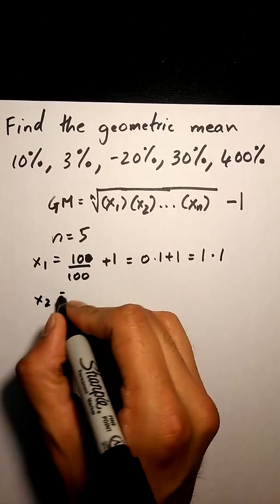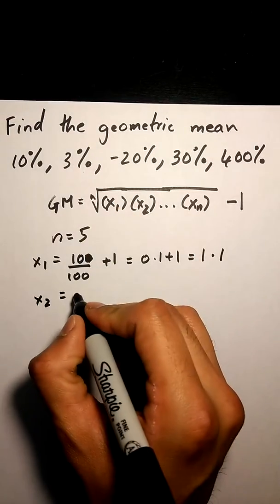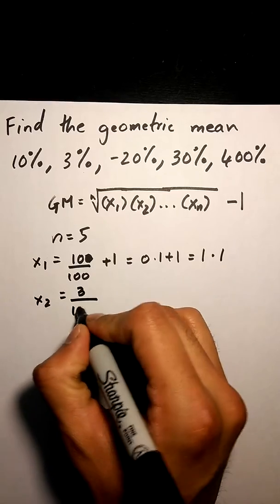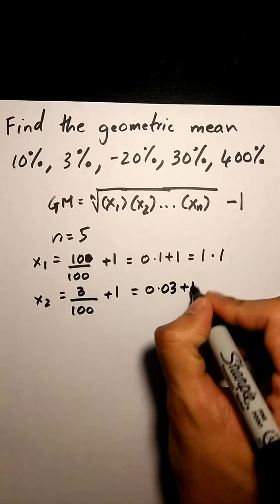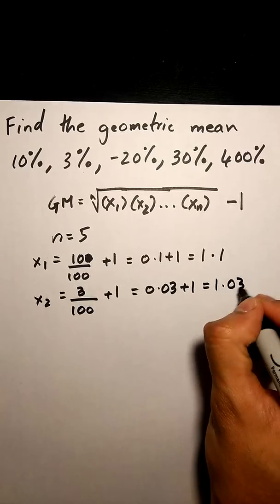My x2 is going to be the same thing. I'm going to take 3%, write 3 over 100 plus 1, which is 0.03 plus 1, equals 1.03.